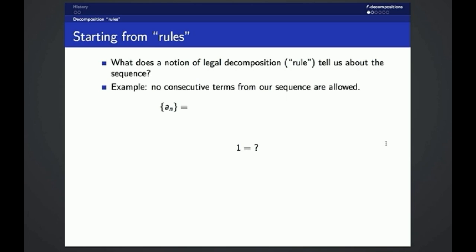So if we want to be able to represent one as a sum of terms from our sequence, and we start with nothing in our sequence, then one should be an element of our sequence. Similarly, if we want to represent two uniquely as a sum of terms from our sequence, and all we have is one, then we have no choice but to add two into our sequence.